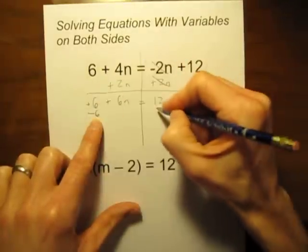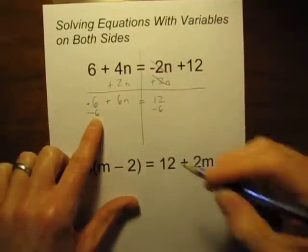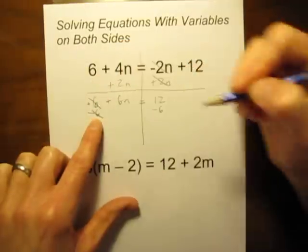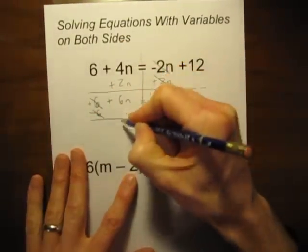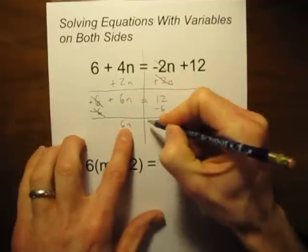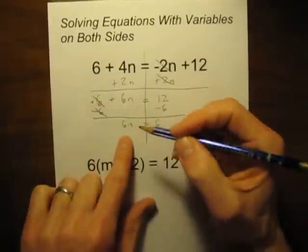If you subtract 6 from this side, you need to subtract 6 from the right hand side as well. 6 minus 6 is 0, they cancel. What's left? 6n is left, is equal to 12 minus 6 is 6.